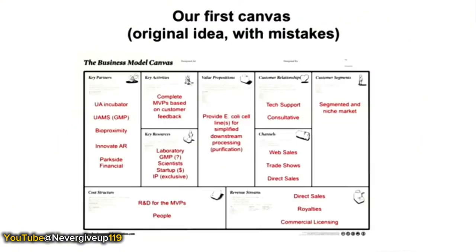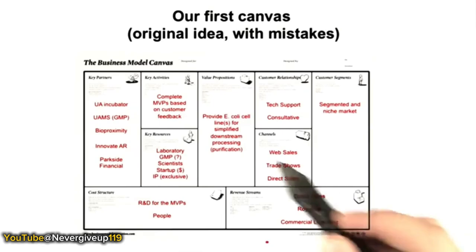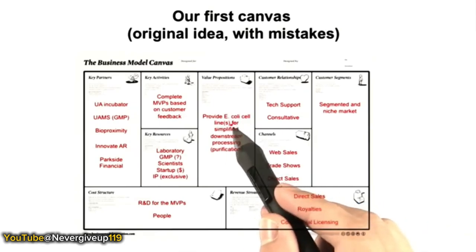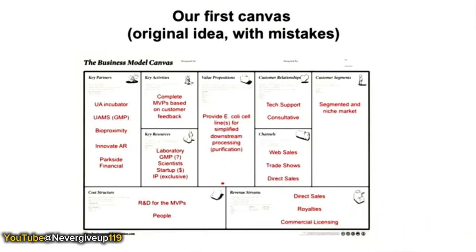Google Search was a very simple multi-sided market — just two sides, users and payers. But can the canvas work with something more complicated, like in life sciences? Here's an example of a business model canvas from a life sciences company that was going to provide E. coli cell lines for simplified downstream processing.